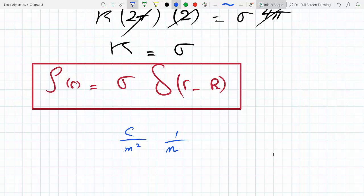So this is 1 over meter, and if you multiply this you get coulombs per meter cubed, which is exactly what rho is, charge per unit volume. So this verifies that the units do indeed work out.